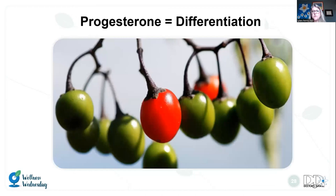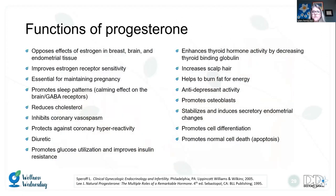Now we'll move on to progesterone. While estrogen promotes growth, progesterone influences differentiation — it balances estradiol. In cycling women, progesterone is made in the corpus luteum during the second half of the menstrual cycle, with small amounts also produced by the adrenal gland. Progesterone opposes the effects of estrogen's growth in tissues like the brain, breast, and endometrium. It promotes cell differentiation, meaning cells become what they were meant to be — not unbridled growth. It can help with sleep when given orally and can enhance thyroid hormone activity by decreasing thyroid binding globulin.